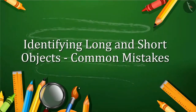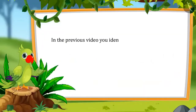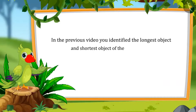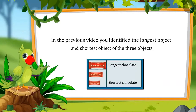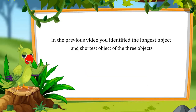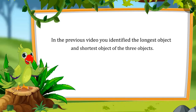Common mistakes in identification of long and short objects. In the previous video, you identified the longest object and the shortest object out of three objects. In this video, we will learn about some common mistakes in identifying long and short objects.